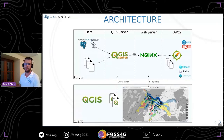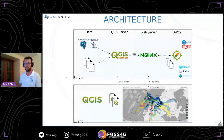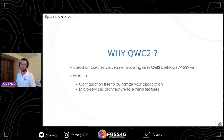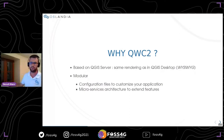At Oslandia, we chose to use QGIS Web Client because it is based on QGIS server, and we have experience on QGIS server and QGIS desktop. It has the same rendering as in QGIS desktop — what you see in QGIS desktop is what you get in QGIS server and in your QGIS Web Client application. It is a modular application, so you can configure all the features you want, whether React plugins for basic features or microservices on the server side, which I will talk about later.